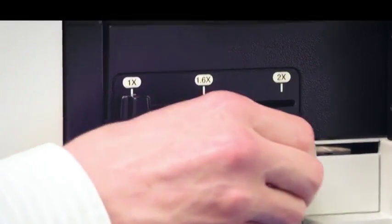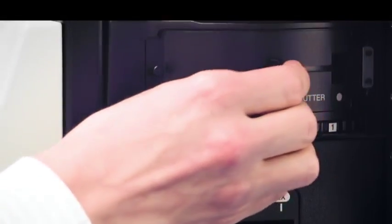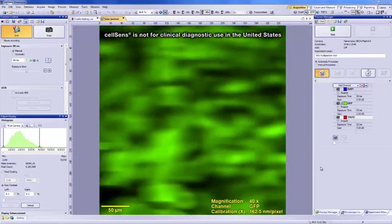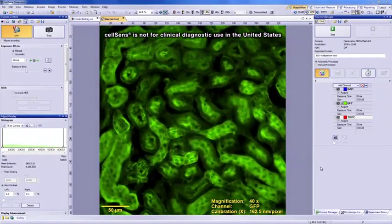With the Olympus IX-73 Inverted Research Microscope and Olympus CellSense software, the user has the power to design a research microscope system where intuition is a built-in feature.